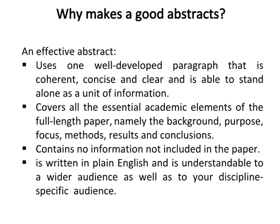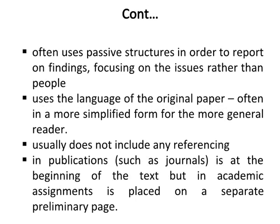What makes a good abstract? An effective abstract uses one well-developed paragraph that is coherent, concise, and clear, and is able to stand alone as a unit of information. It covers all the essential academic elements of the full-length paper — namely the background, purpose, focus, methods, results, and conclusions. It contains no information not included in the paper, is written in plain English, and is understandable to a wider audience as well as to your discipline-specific audience. It often uses passive structures to report on findings, focusing on the issues rather than people, and uses the language of the original paper, often in a more simplified form for the general reader. It usually does not include any referencing. In publications such as journals, it is at the beginning of the text, but in academic assignments it is placed on a separate preliminary page.